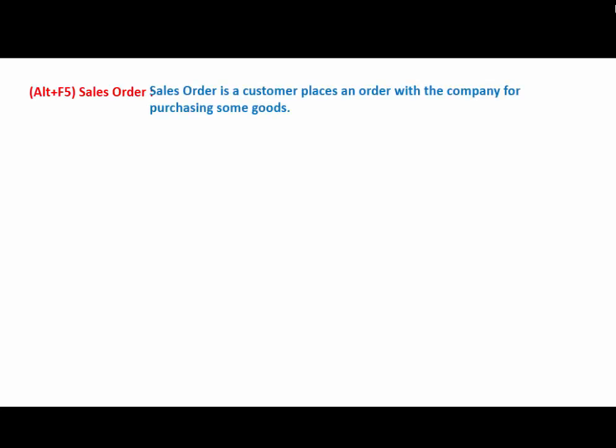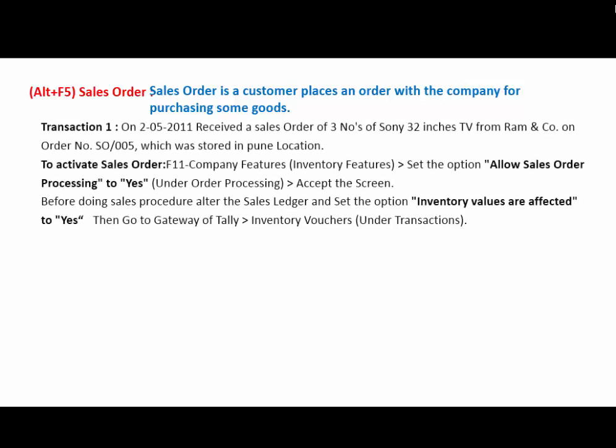The next is Sales Order. The key used is ALT+F5. The Sales Order is when a customer places an order with the company for purchasing some goods. For example, on 2nd May, received a sales order for 3 units of Sony 32-inch TV from Ram & Company. The order number is SO/005, which was stored in Pune location. For activating sales order, press F11 Company Features, then go to Inventory Features, and set Allow Sales Order Processing to Yes, under the heading Order Processing, and accept the screen.